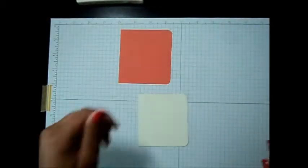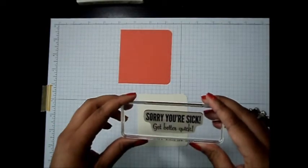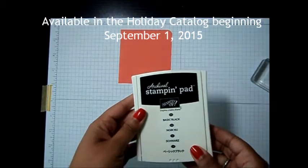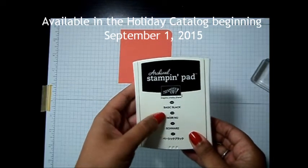Okay, so now we're going to do a little bit of stamping. So I've got my greeting already on my block. This is Sorry You're Sick, Get Better Quick. And I'm using the Archival Stampin' Pad. This is Basic Black.